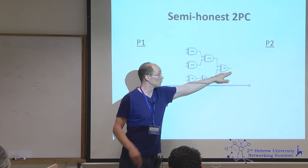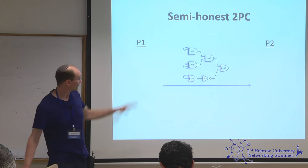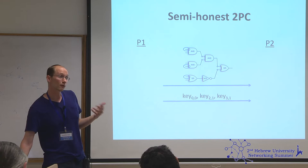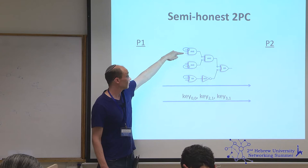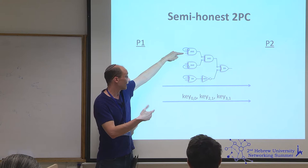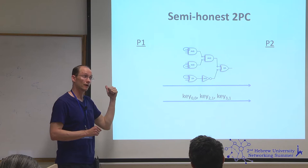If P2 has cryptographic values corresponding to each input wire, it can evaluate the circuit and learn an actual boolean value for the output wire. P1 encodes the values for its own input wires — call them keys — and what's left is for P2 to obtain one of the two possible keys for its own input wires. If P2 holds a zero bit on an input wire it receives key k_{1,0}, and if it holds a one it obtains key k_{1,1}. If it tells P1 which key to send, that violates its own privacy.